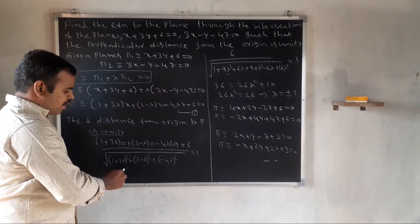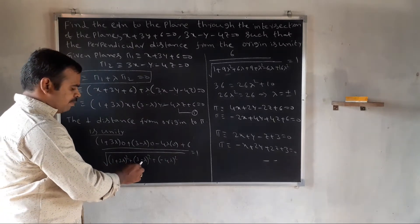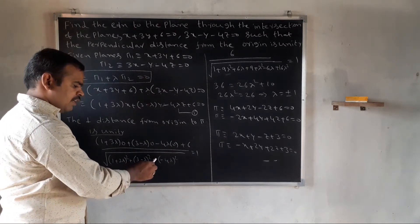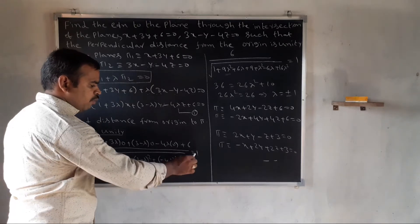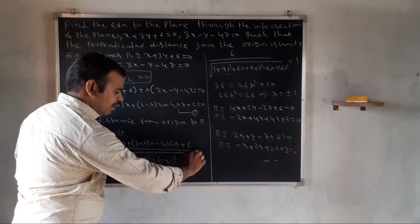Applying the formula with origin (0,0,0): 6 divided by square root of 1 plus 3 lambda whole square plus 3 minus lambda whole square plus 4 lambda whole square equals unity, equal to 1.